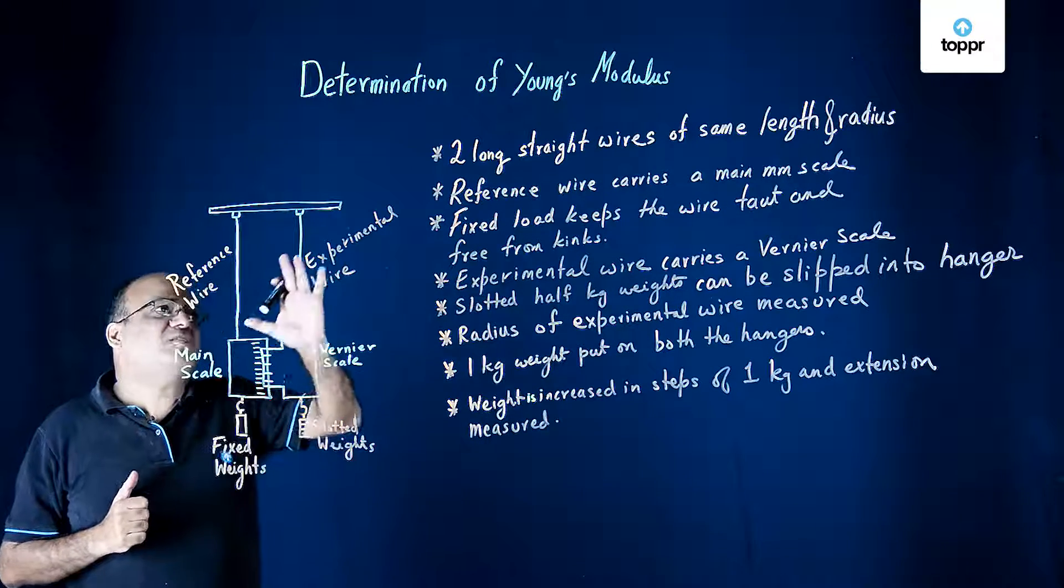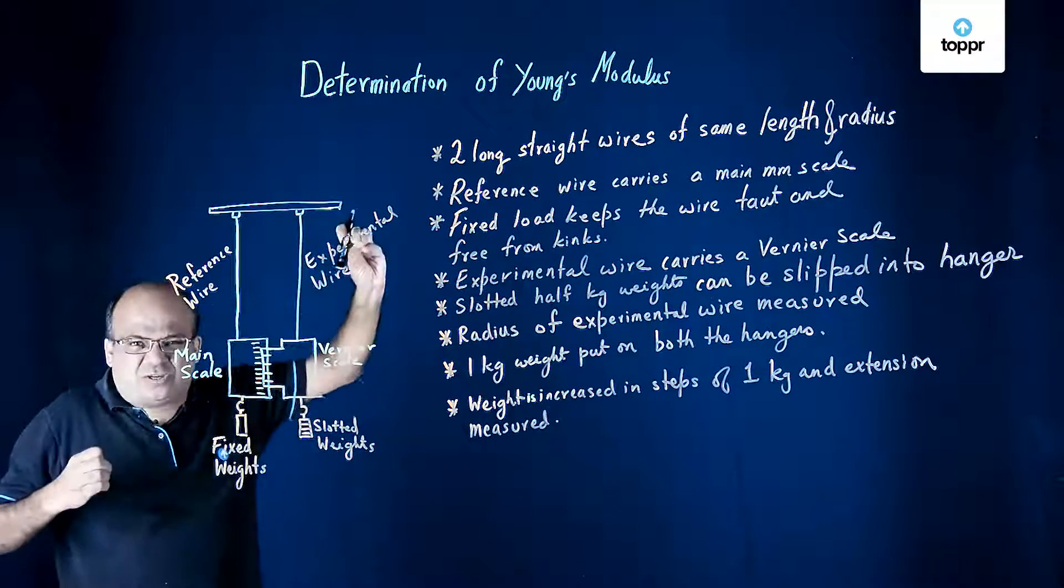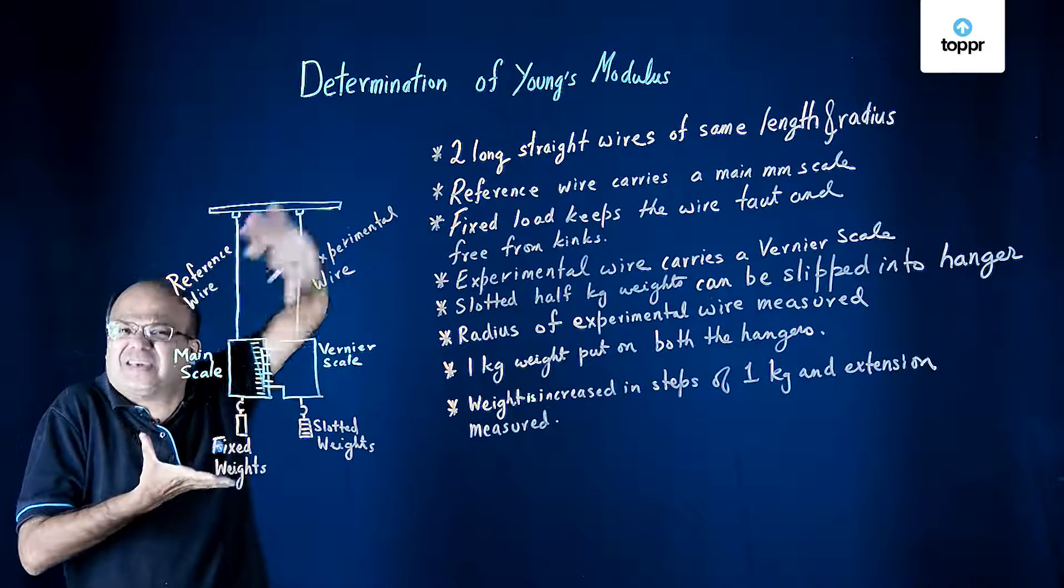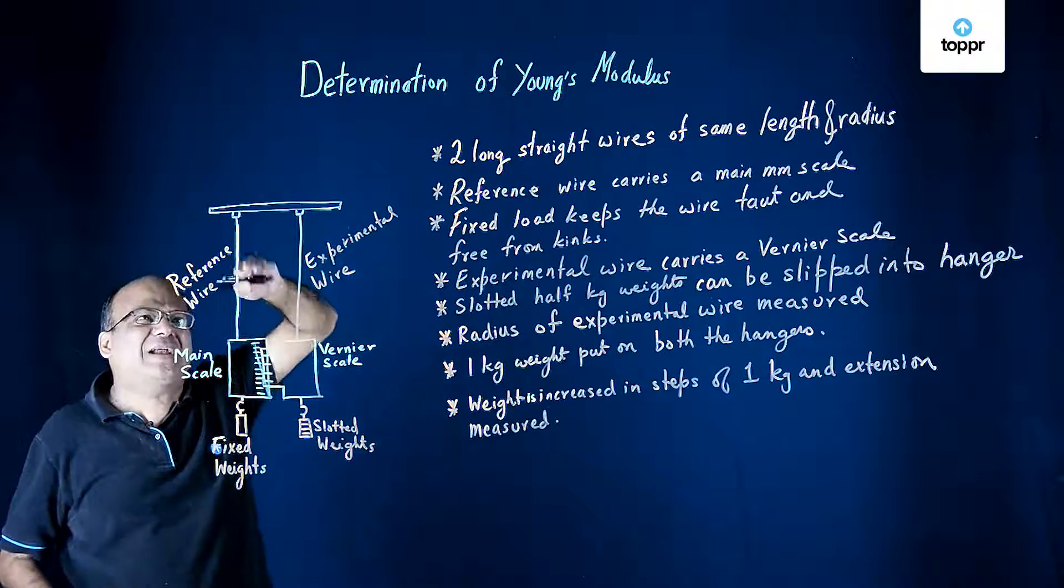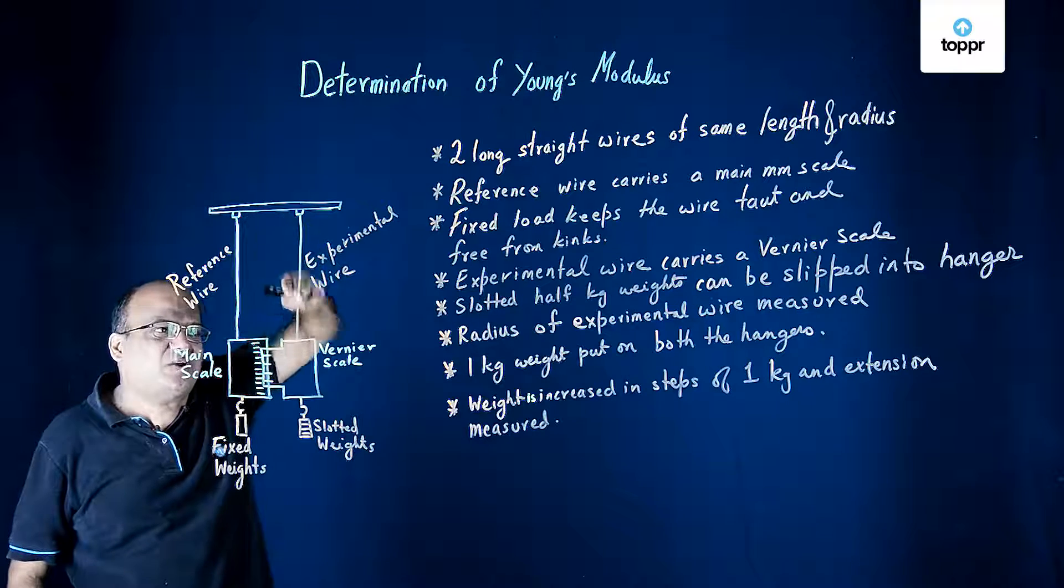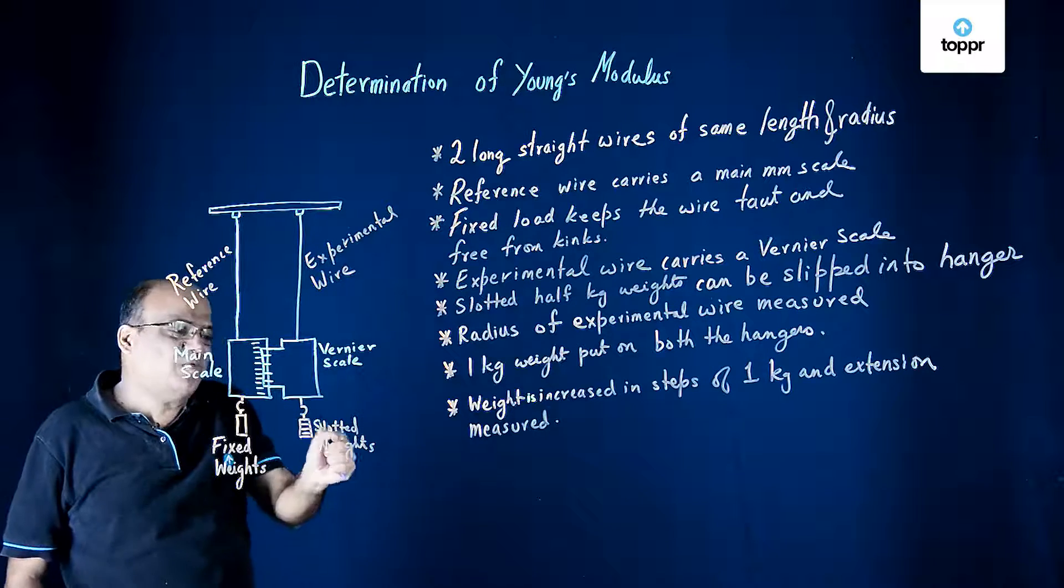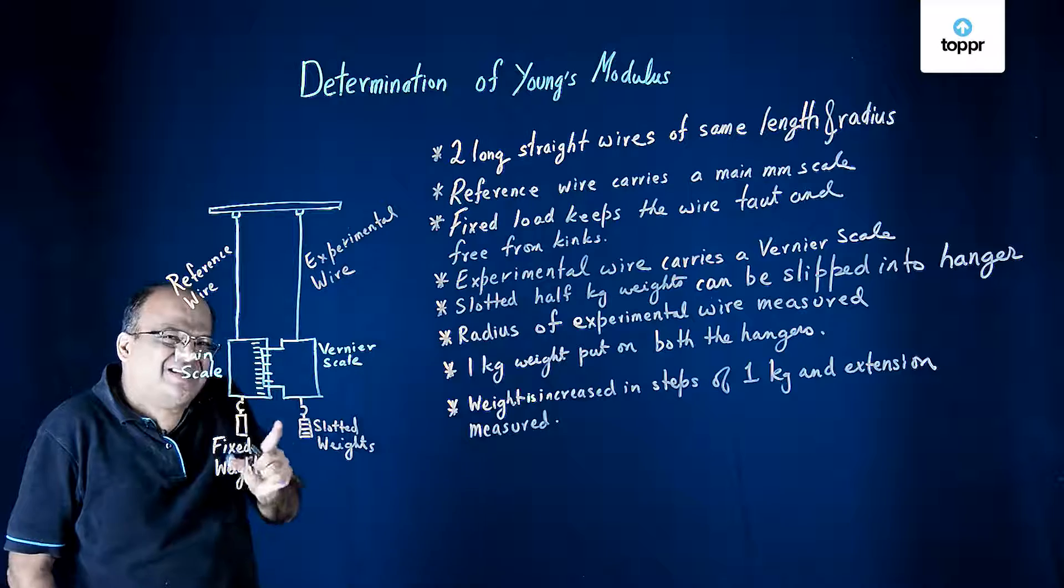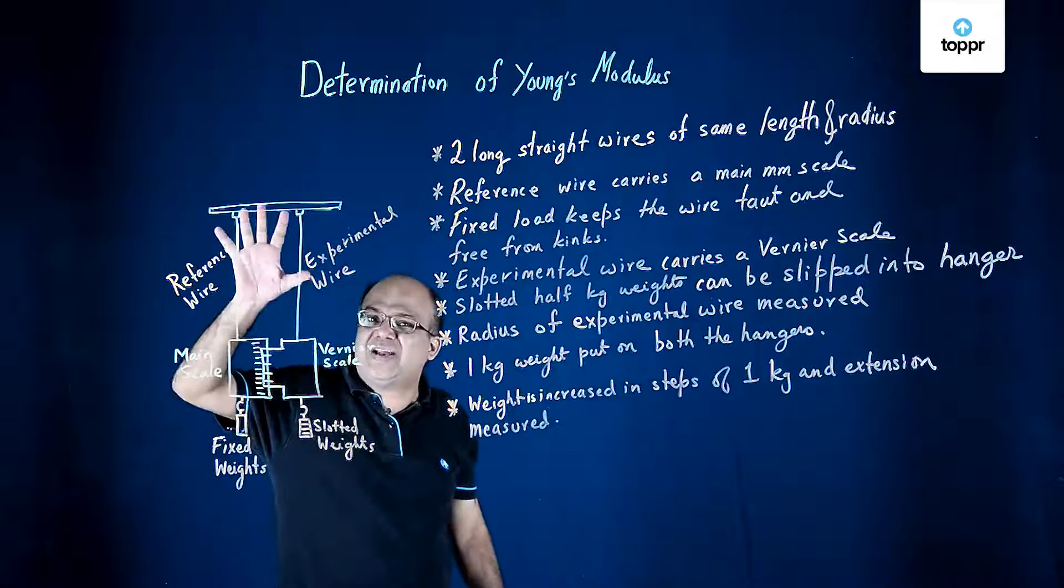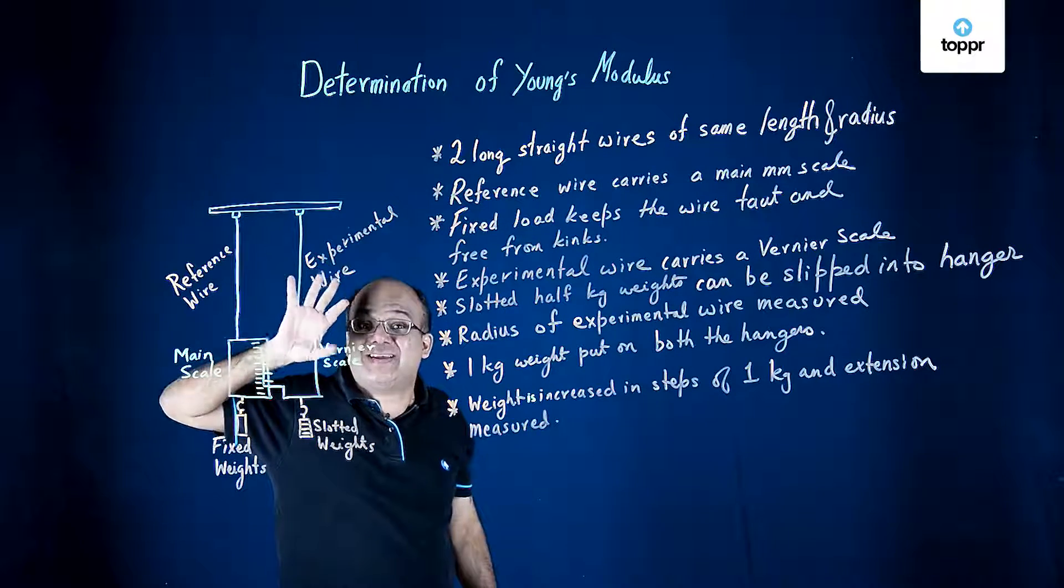Initially we want the wires to be taut. Taut means tight without any kinks. No bending, straight wires you want. So you put 1 kg here, 1 kg here. Some weight we hang, initial weight say 1 kg so that the wire is taut and kink free.